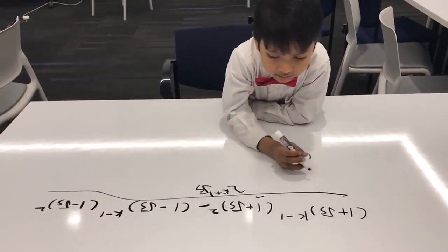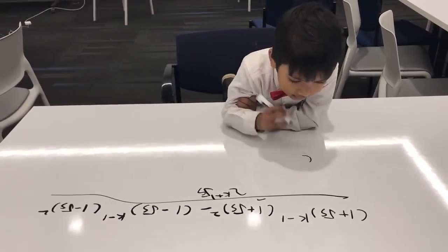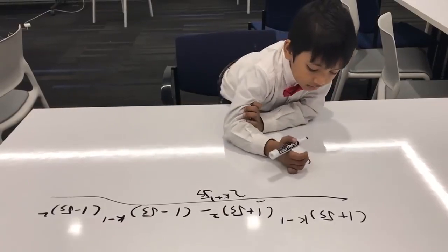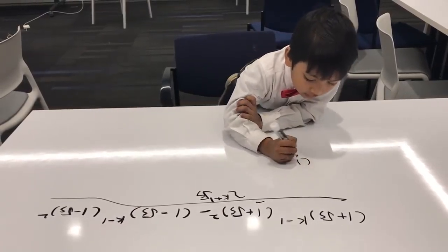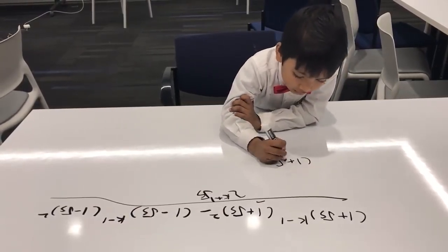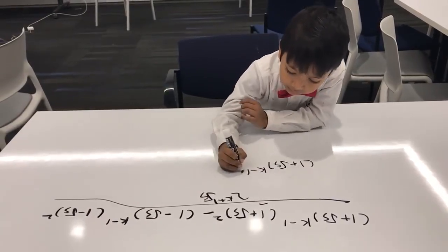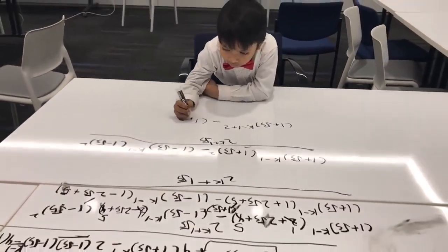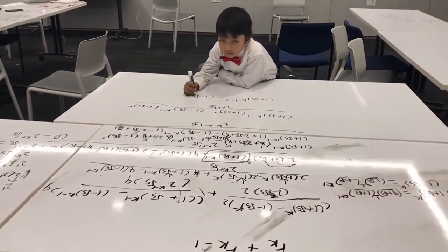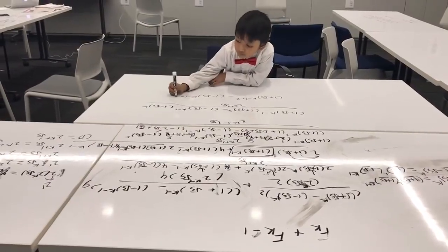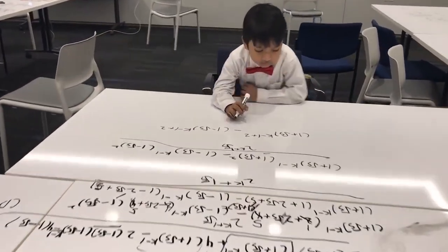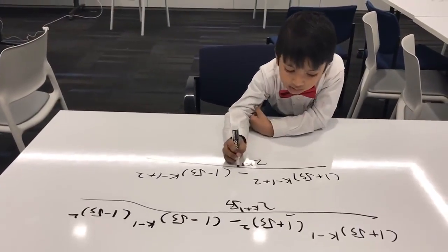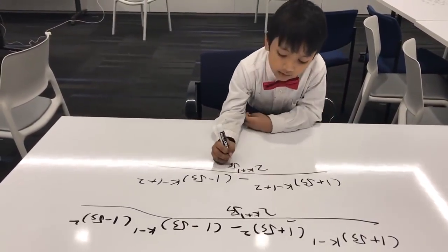So the bases are same. So 1 plus 4 to 5, minus 1 plus 2, minus 1 minus square root of 5, k minus 1 plus 2, over 2, k plus 1, square root of 5.